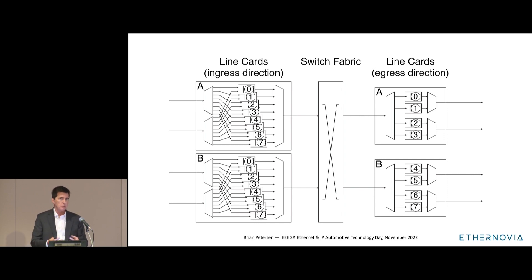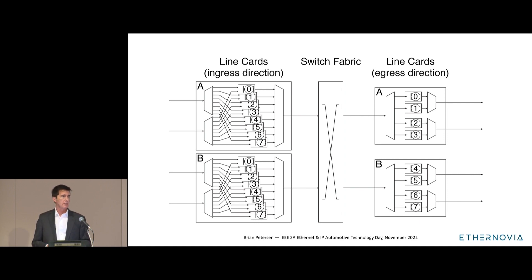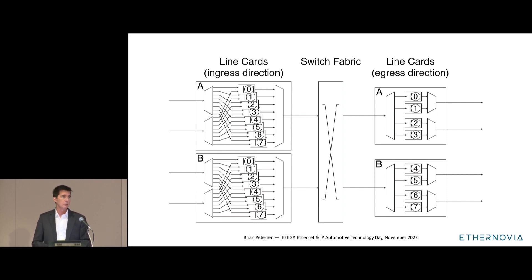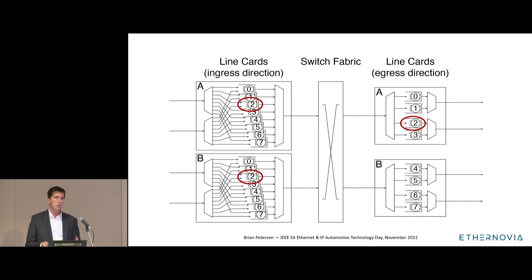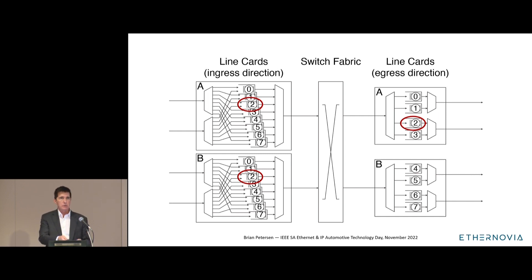Each ingress line card has an input queue for every possible output queue across the entire system — so with 24 line cards, 100 ports per line card, and 8 queues per port, you could have thousands of input queues on each ingress line card. The beauty of this system is that if output queue two has to operate more slowly, its corresponding input queues on the other side of the fabric also operate more slowly without slowing down the other queues. This avoids head-of-line blocking.